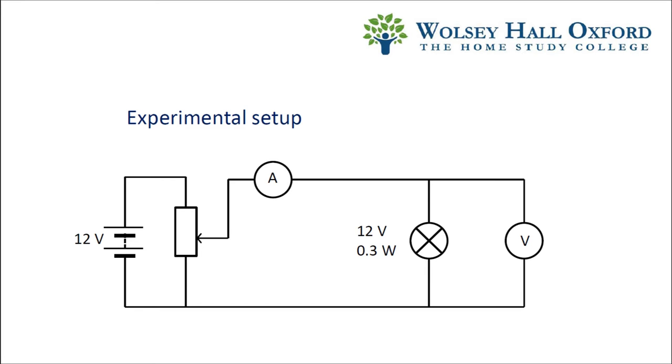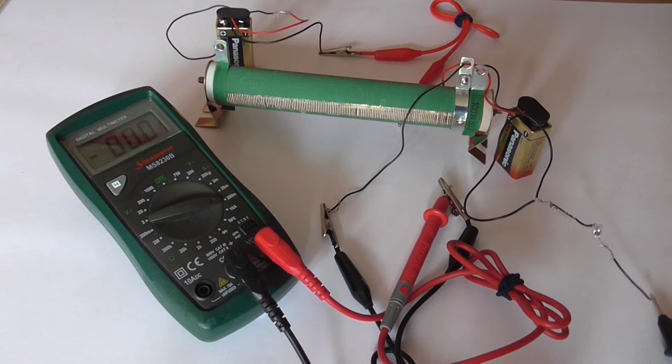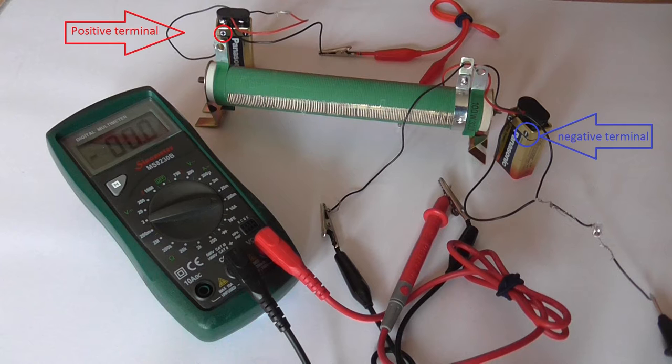Although I put that the cell is 12 volts in the circuit diagram, I've actually connected two 9-volt batteries. Note which one's the positive terminal and which is the negative terminal. How it all comes together is a lot clearer if you can actually do the experiment yourself.